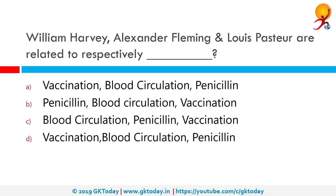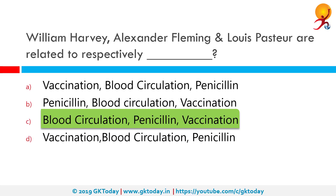William Harvey, Alexander Fleming and Louis Pasteur are related to which of these options respectively? William Harvey is related to blood circulation, Alexander Fleming to penicillin, and Louis Pasteur to vaccination. Harvey was the first known physician to describe completely and in detail the systemic circulation and properties of blood being pumped to the brain and body by the heart. Sir Alexander Fleming is best known for his discovery of the world's first antibiotic substance, benzyl penicillin or penicillin G, from the mold Penicillium notatum, which won him the Nobel Prize. Pasteur demonstrated that microorganisms cause disease and discovered how to make vaccines from weakened or attenuated microbes.